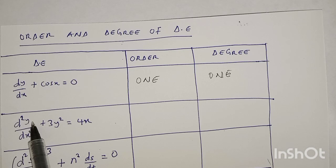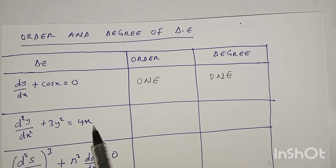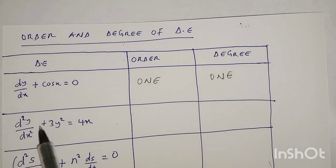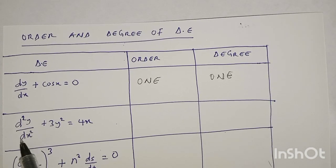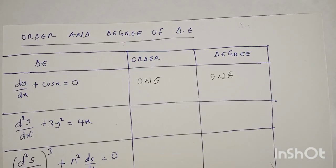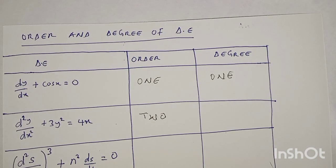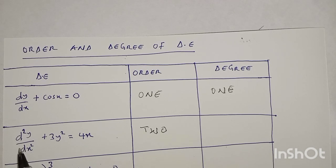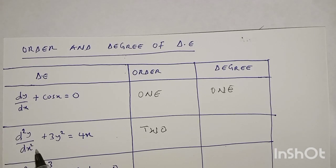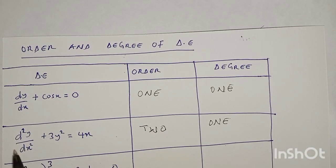Another differential equation is d²y/dx² + 3y² = 4x. This is a differential equation because it involves derivatives. The highest derivative here is d²y/dx², which is a second derivative, so the order is 2. This second derivative has no power, therefore the degree is also 1.